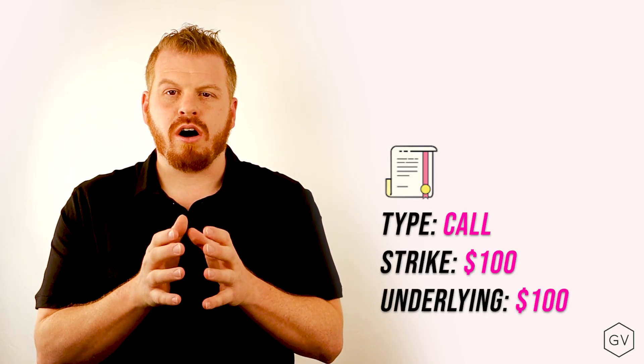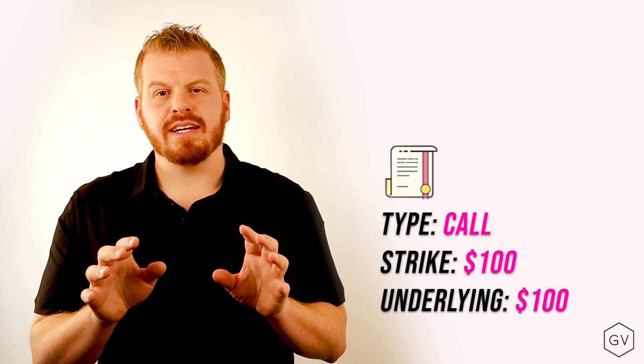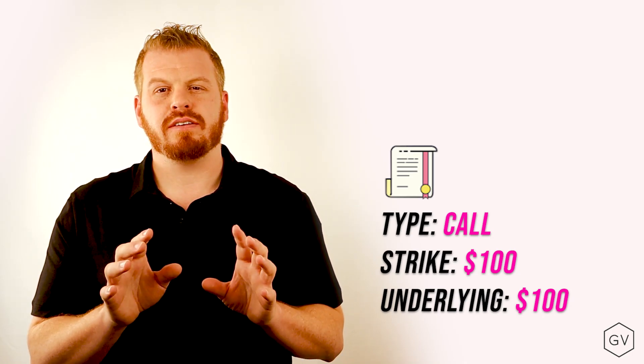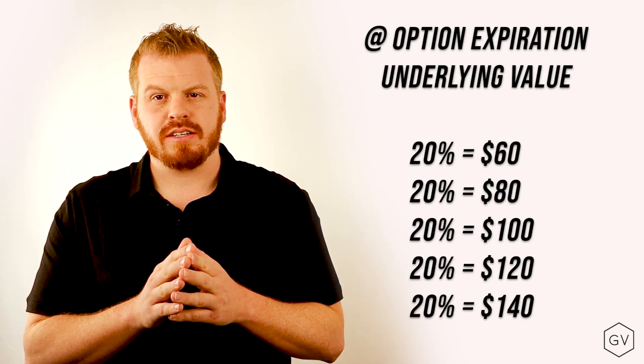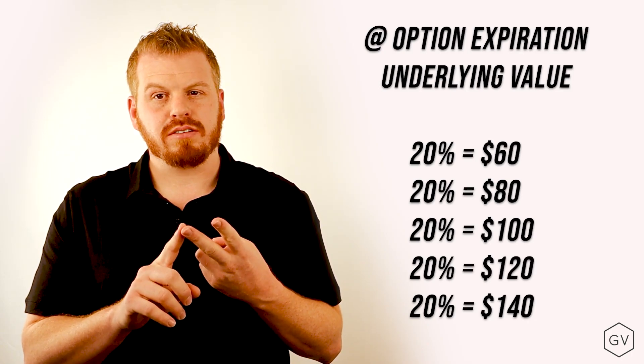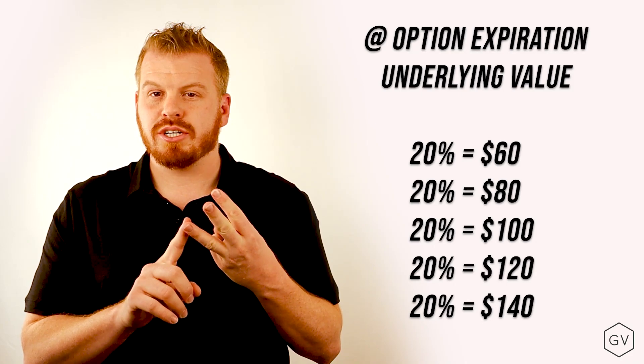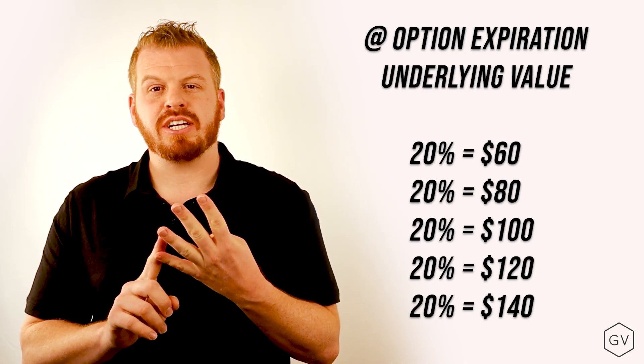Let's look at a simple example where the underlying is $100 and we're looking at a call with a strike price of $100. Let's further simplify and say by the option's expiration, this underlying can have one of five values. There's a 20% chance the underlying is at $60, a 20% chance it's at $80, a 20% chance it's at $100, a 20% chance it's at $120, and a 20% chance it's at $140.